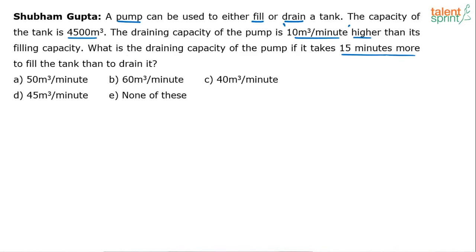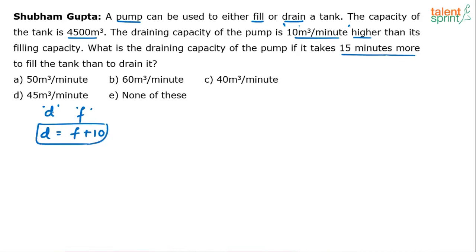Let's try this out. Let's assume that the draining capacity of the pump is D and the filling capacity is F. The rate at which it can fill is F and the rate at which it can drain is D. According to the question, the draining capacity is 10 meter cube per minute higher than the filling capacity, which means D equals F plus 10. Capacity here is measured in meter cube per minute. So D equals F plus 10 — that's the first equation.